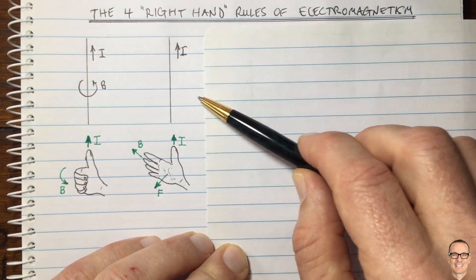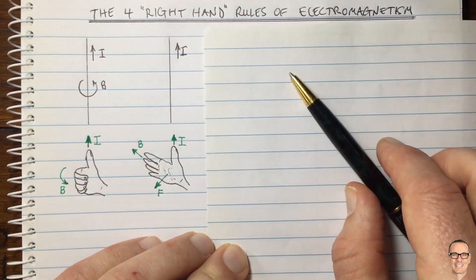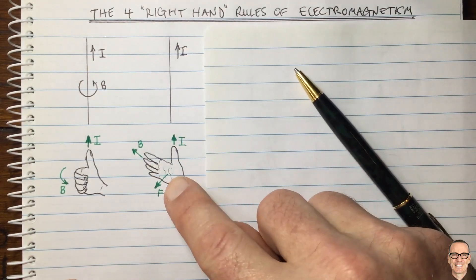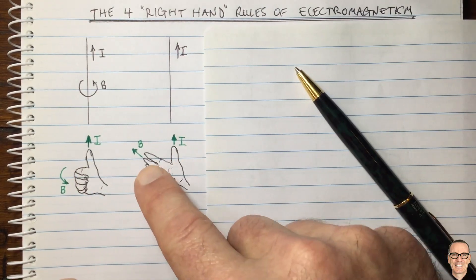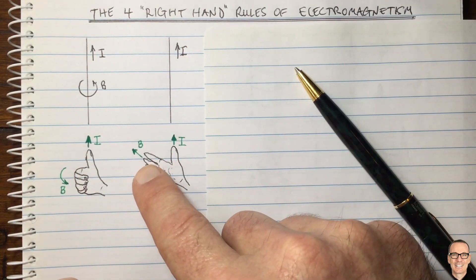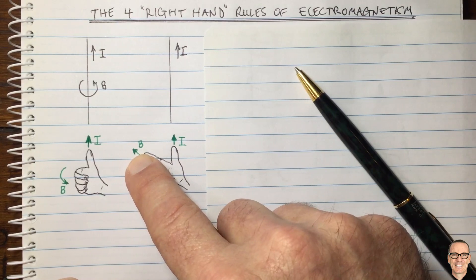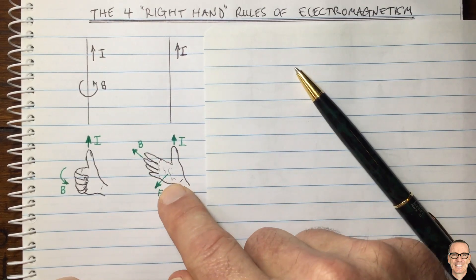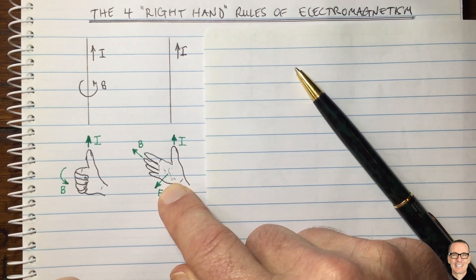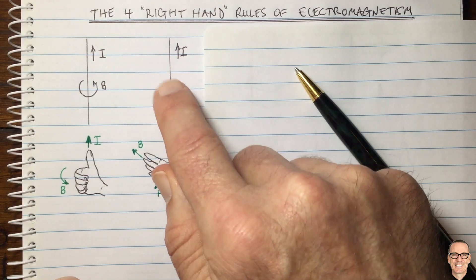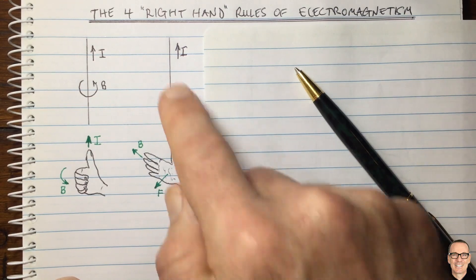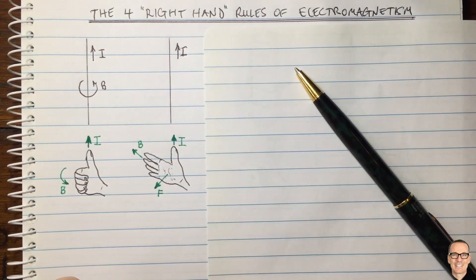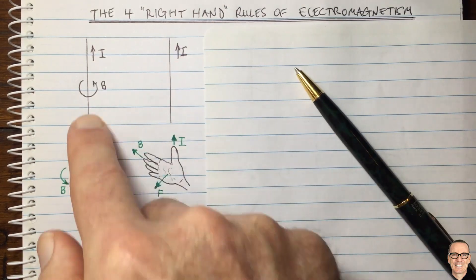This is when the second rule applies. With an open palm, you put your thumb in the direction of the current, then face your open fingers in the direction of the magnetic field, and your palm shows you the direction of the force acting on the positive charges in the wire.